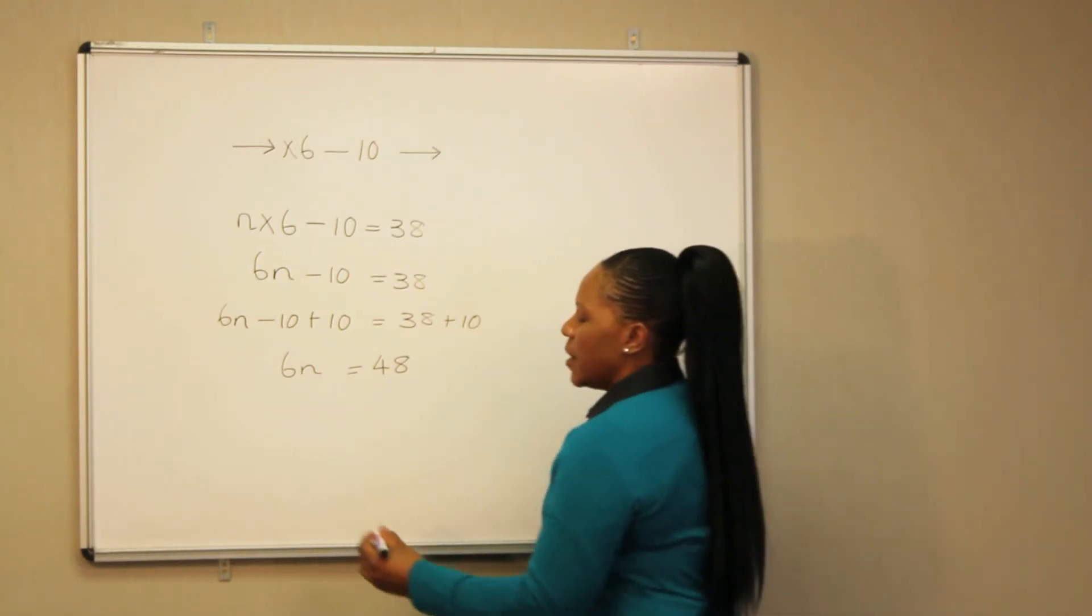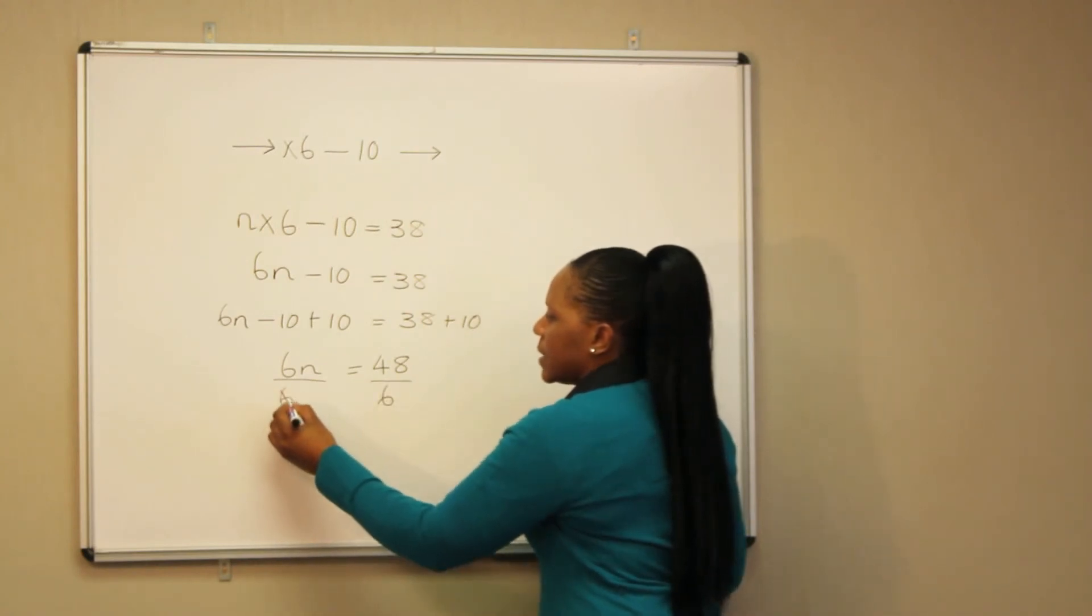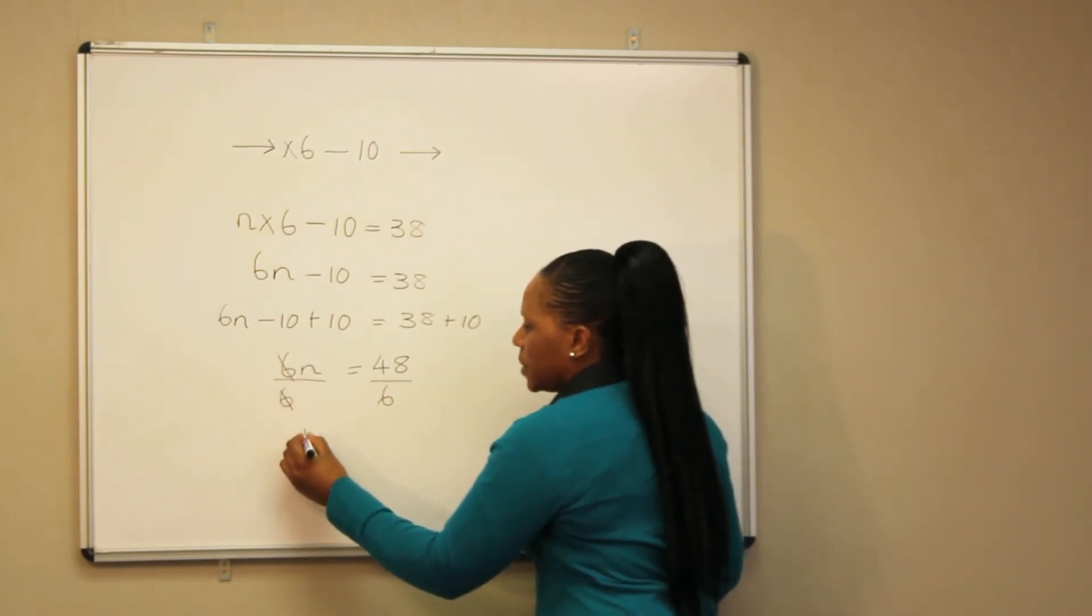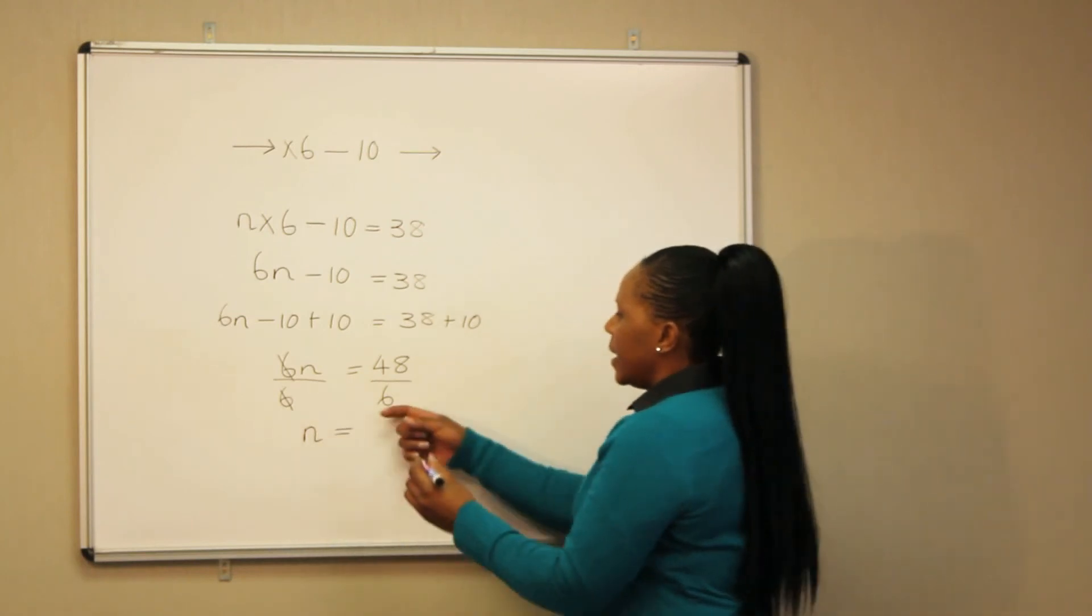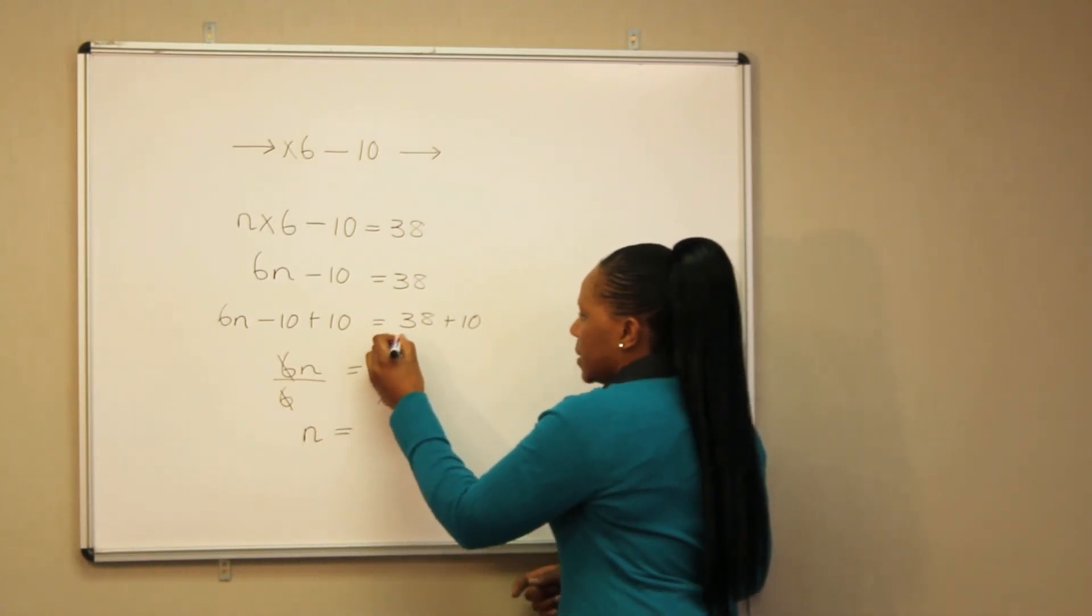Solving for n, we are going to divide both sides by 6. 6 into 6, we get 1, which leaves us with n. And 6 into 48, we get 8. So, the value of n is equal to 8.